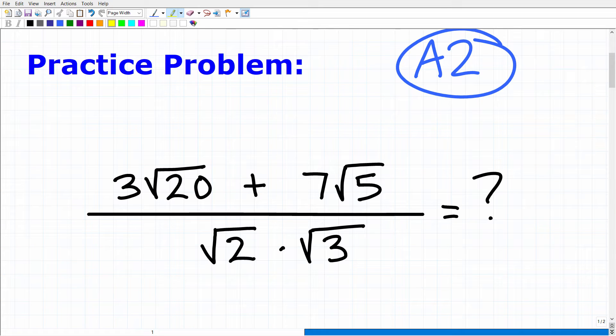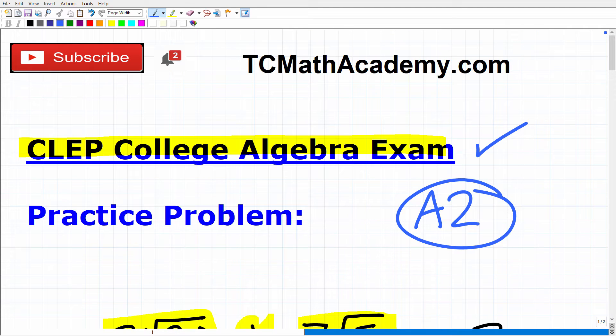So we want to simplify this expression. The expression is 3 times the square root of 20 plus 7 times the square root of 5 all over the square root of 2 times the square root of 3. Okay, so if you could figure this out, go ahead and put your answer into the comments section.